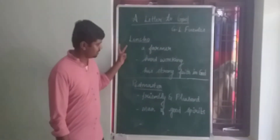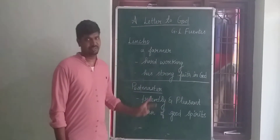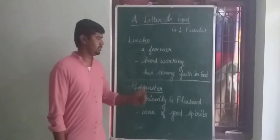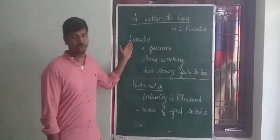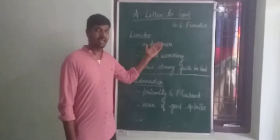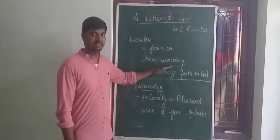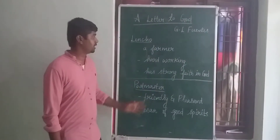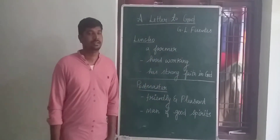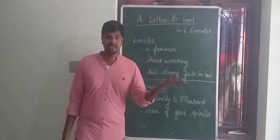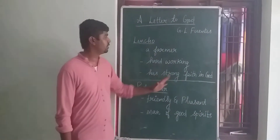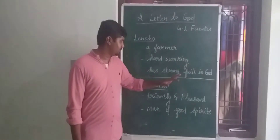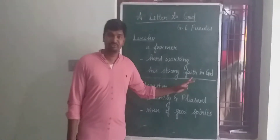Firstly, we are going to see the character analysis. There are only two major characters involved in this chapter. The first one is Lencho. He is a farmer and a hard-working person and he has strong faith in God. Sometimes they may ask a question about this character Lencho — what kind of person he is. So just a small introduction: he is a farmer and a hard-working man, and he has strong faith in God.